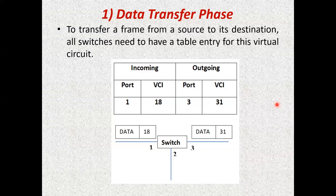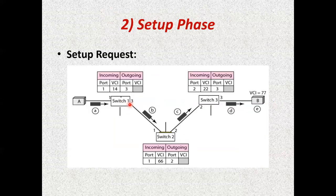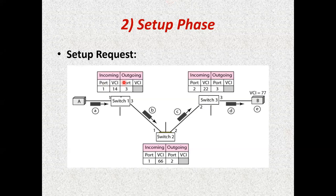The port number refers to the numbered ports on a switch — if there are 5 ports they are assigned numbers 1 through 5. The VCI is assigned to every connection from a device to a switch; it can be any number but must be unique with respect to that switch. We call this the virtual circuit identifier. Before sending data, a setup request signal is sent from A to B.